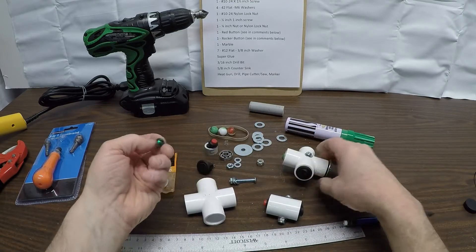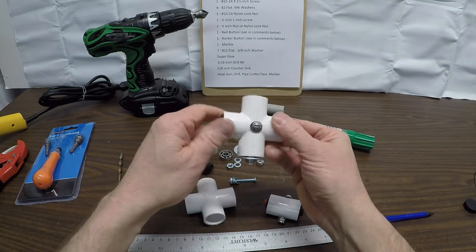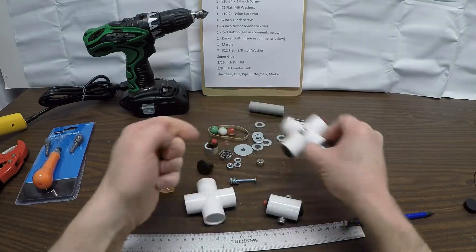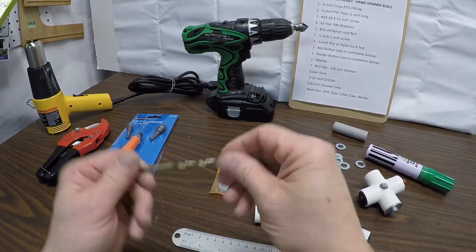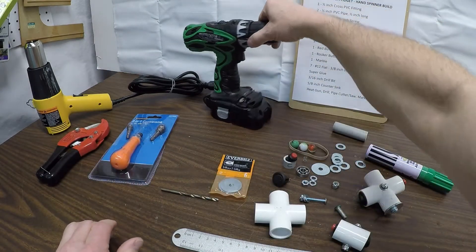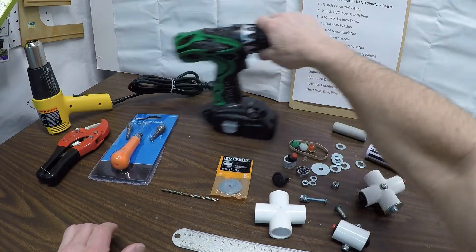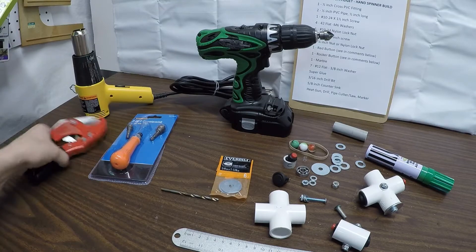Some super glue to glue it all together, although quite frankly these are all pressure fit and they seem to work. The tools you'll need for this build are a 3/16 inch drill bit, a 5/8 inch countersink drill, a heat gun, and pipe cutter.